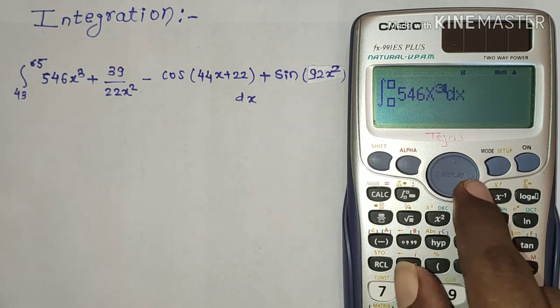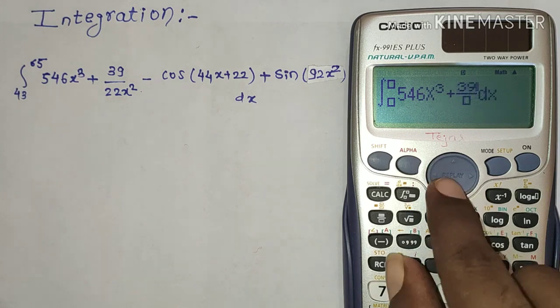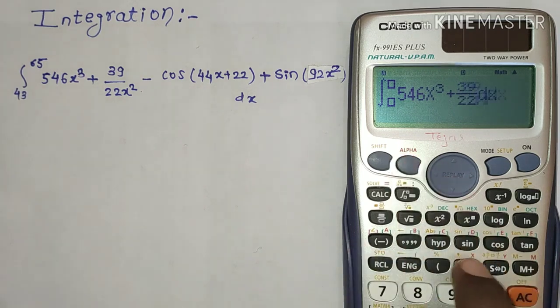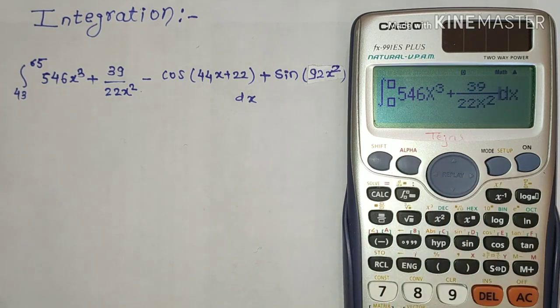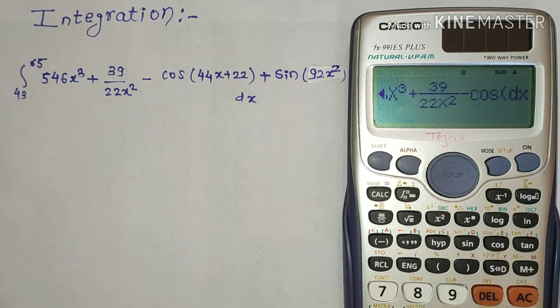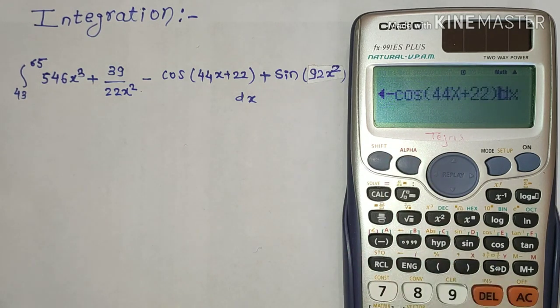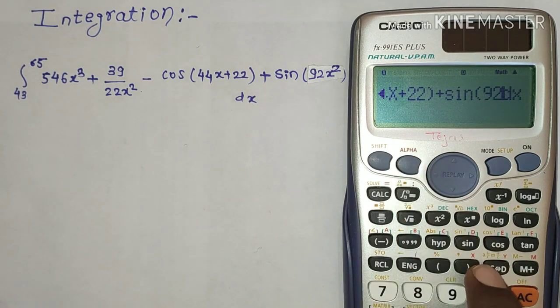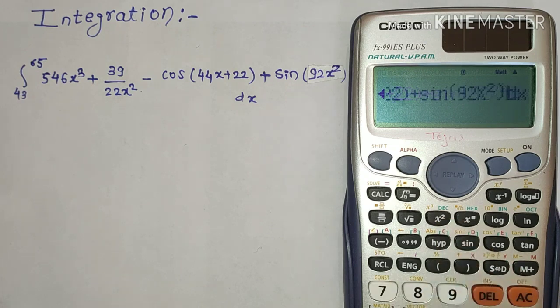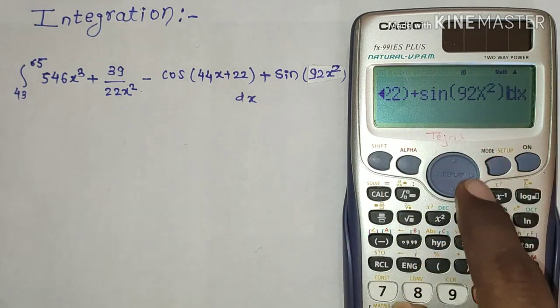So cube plus 39 upon 22x² minus cos of (44x + 22) plus sin of (92x²), bracket complete. So here we have written down the whole expression.